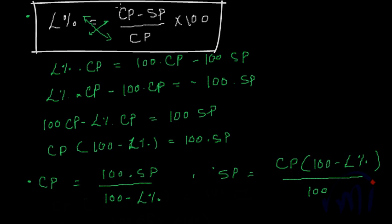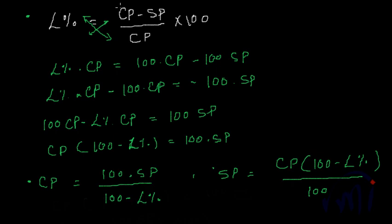These are three loss formulas — for loss percent, cost price, and sale price. Even if you don't remember them, you can always start from first principles. So this covered profit, loss, profit percent, loss percent, cost price, and sale price — six formulas in total. After this we will solve simple problems and then more complicated problems based on profits and losses. Bye-bye till then.